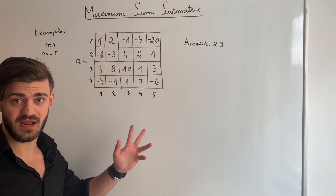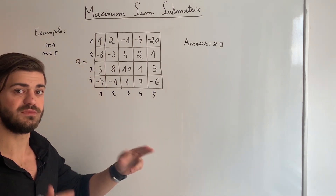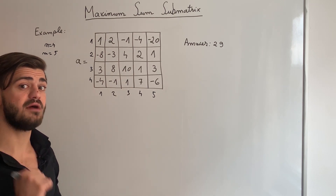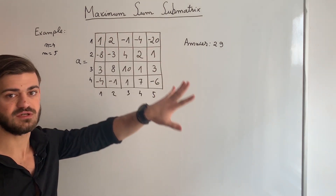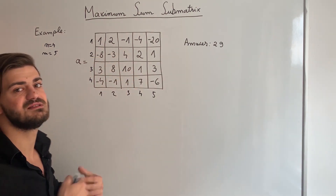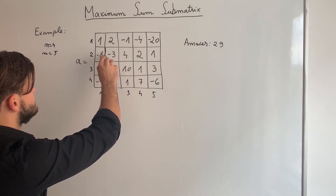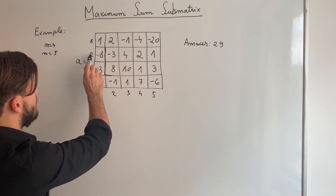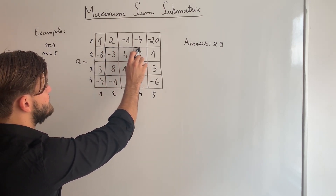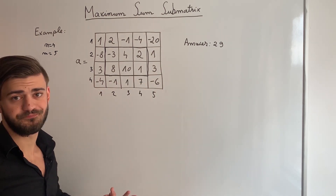We are given a two-dimensional array which is called A, and it has n rows and n columns. The rows and the columns are indexed starting from 1, and we have to find the maximum sum submatrix. A sum matrix is a rectangle from this matrix — for example, a rectangle could be this one, starting at row 2, column 2 as the upper left corner, and ending at the lower right corner in row 3, column 4.